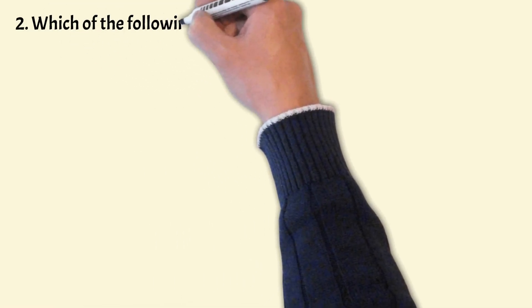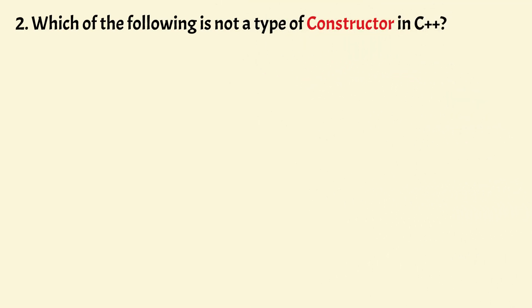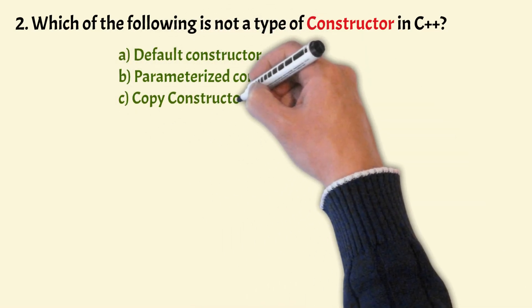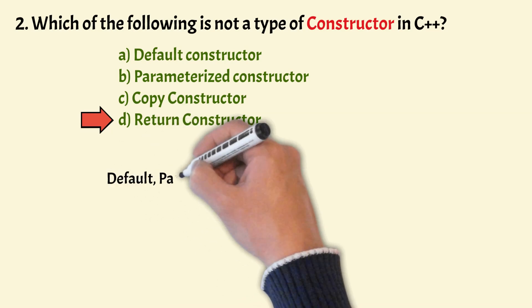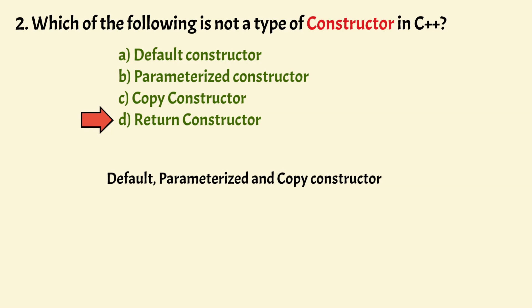Which of the following is not a type of constructor in C++? The options are default constructor, parameterized constructor, copy constructor and return constructor. The correct answer is option D, that is return constructor. There are three types of constructors in C++: default, parameterized and copy constructor. Return constructor is not a type of constructor in C++.